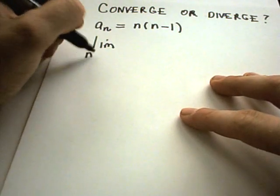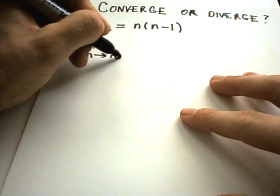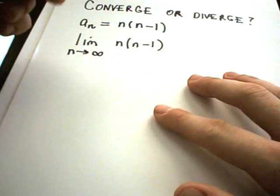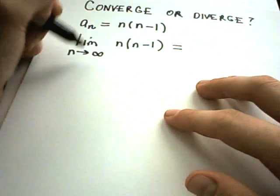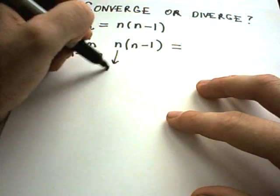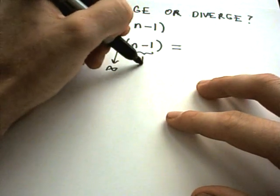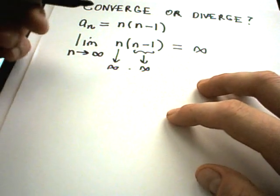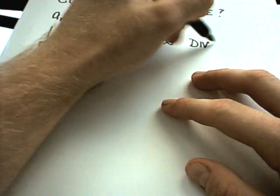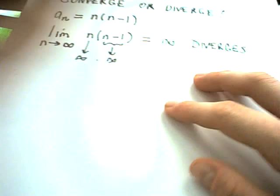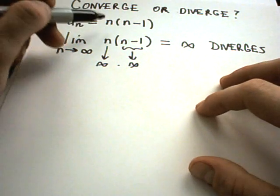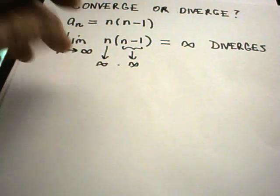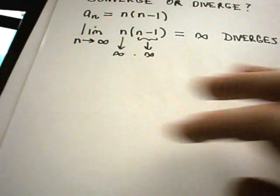We look at the limit as n goes to infinity of n times (n minus 1). As n goes to infinity, n goes to infinity and (n minus 1) also goes to infinity, so the whole thing goes off to infinity. We would say this sequence diverges. If you plug in 1, 2, 3, 4, 5, 6, you'll see the numbers are just getting bigger and bigger.